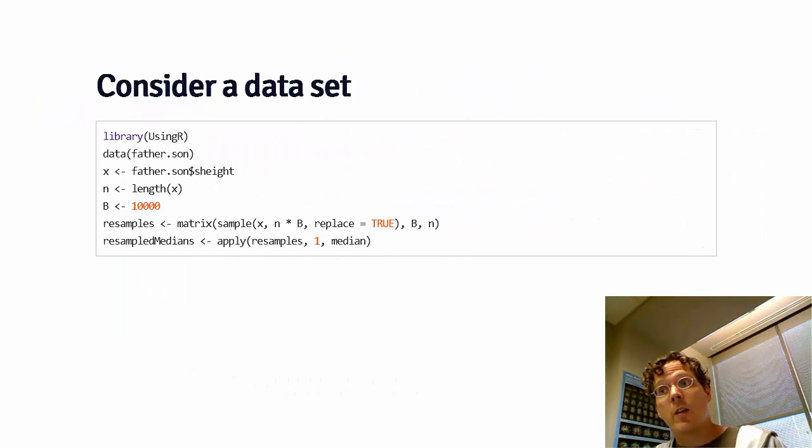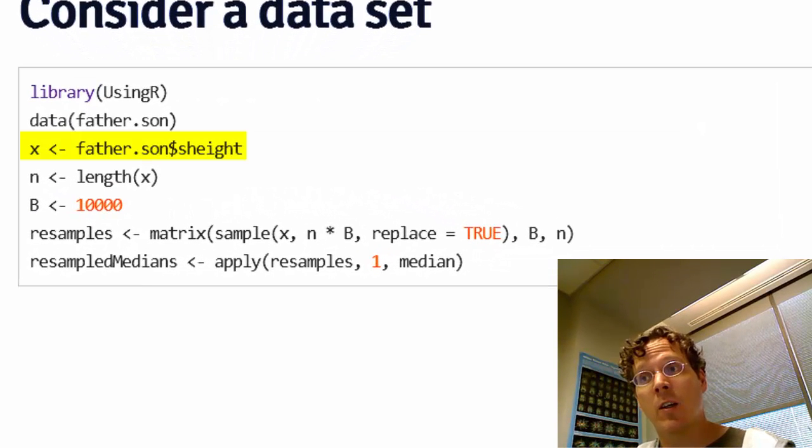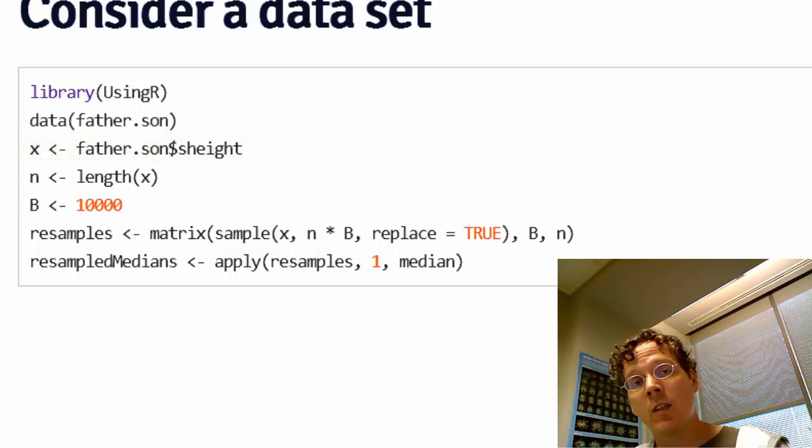Let's consider the library using R and then the father.son data. Just to make my life a little bit easier, I'm going to define x here as the son's height, just so I don't have to keep referring to the data frame. Let's let n be the number of observations, and then I'm going to do 10,000 bootstrap resamples.